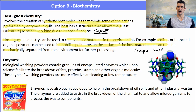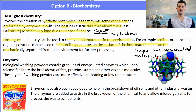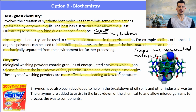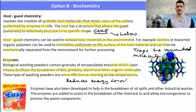Enzymes are biological catalysts. Biological washing powders contain granules of enzymes which, upon release, help to break down fats, proteins, starch and other organic molecules. These washing powders are more effective at cleaning at low temperatures, so instead of running a washing machine at 50 degrees — which increases energy demand — you can wash at cold temperatures and get equally good results. Enzymes have also been developed to help break down oil spills and other industrial wastes, and they're added to assist the breakdown of chemicals allowing microorganisms to process waste components.